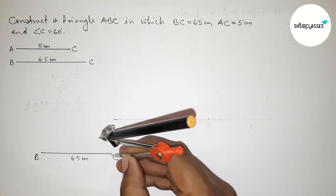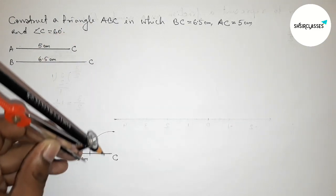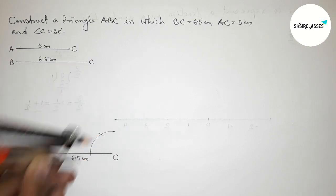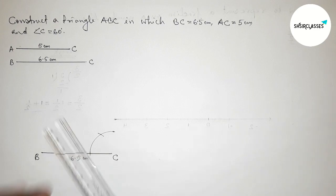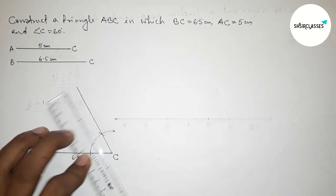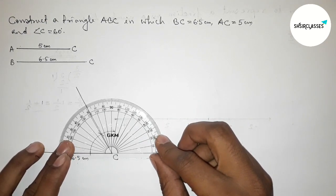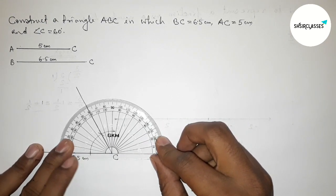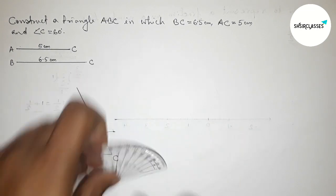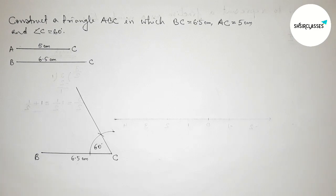Now drawing a 60 degree angle at point C. Putting the compass on point C, taking any length, and drawing an arc. Again putting the compass and taking the same length to cut the arc. Joining this side to get the 60 degree angle. Checking with the protractor — this is perfectly a 60 degree angle, so angle C equals 60 degrees.